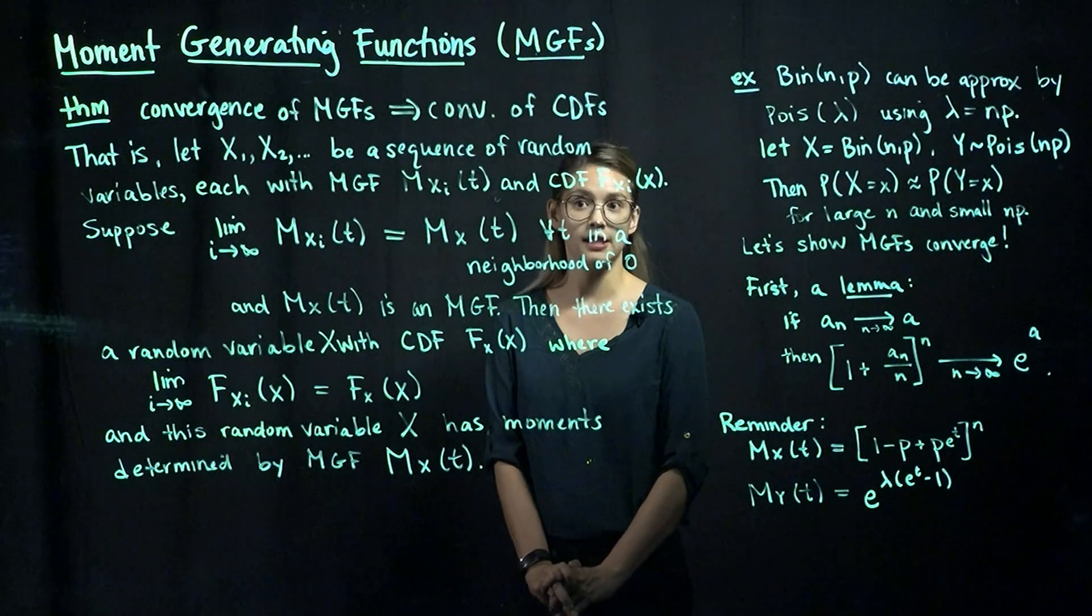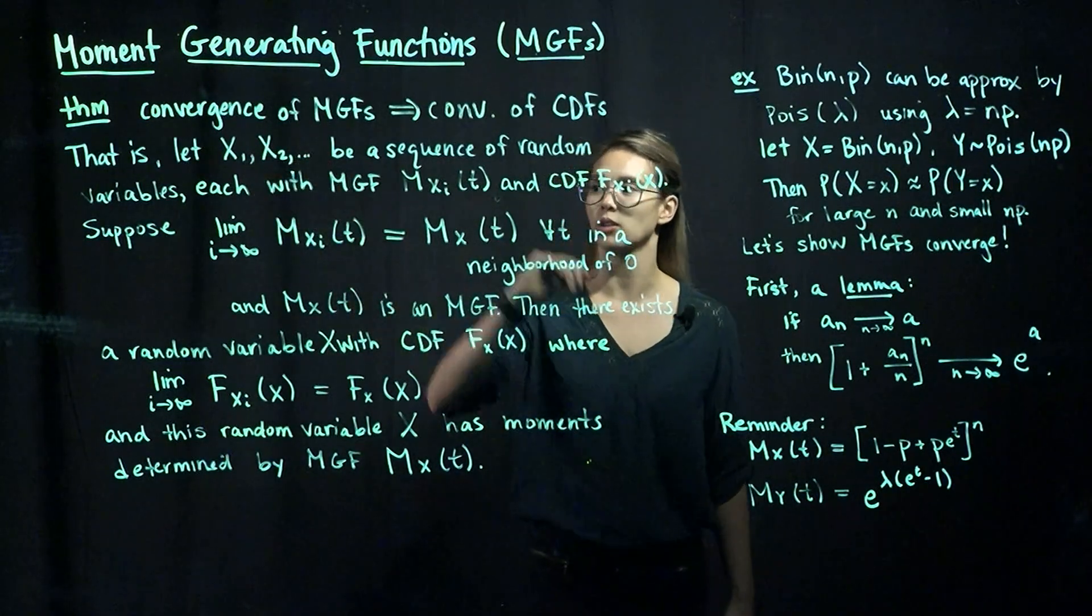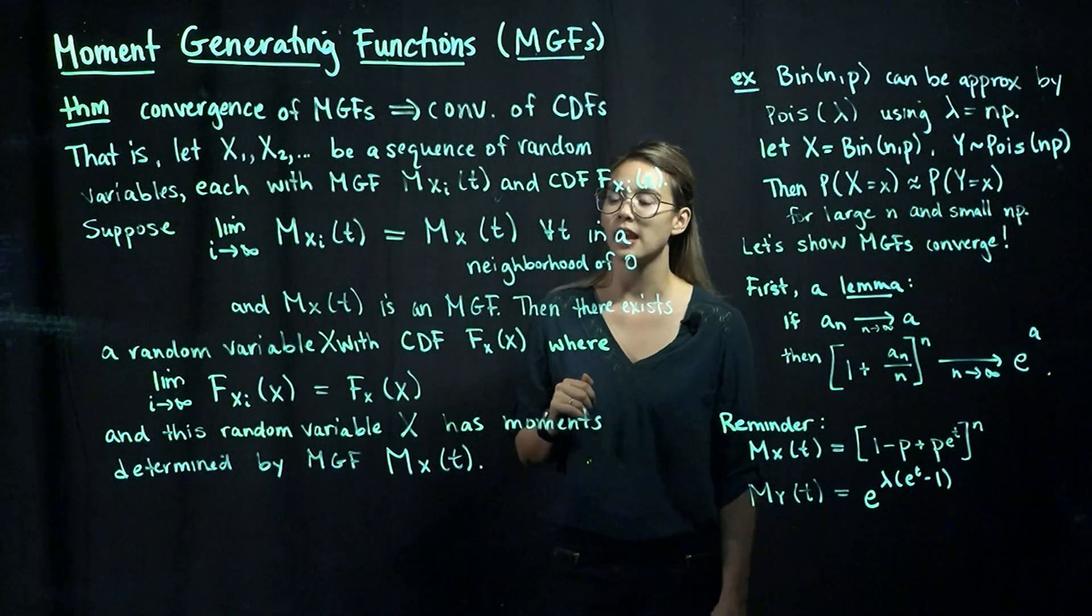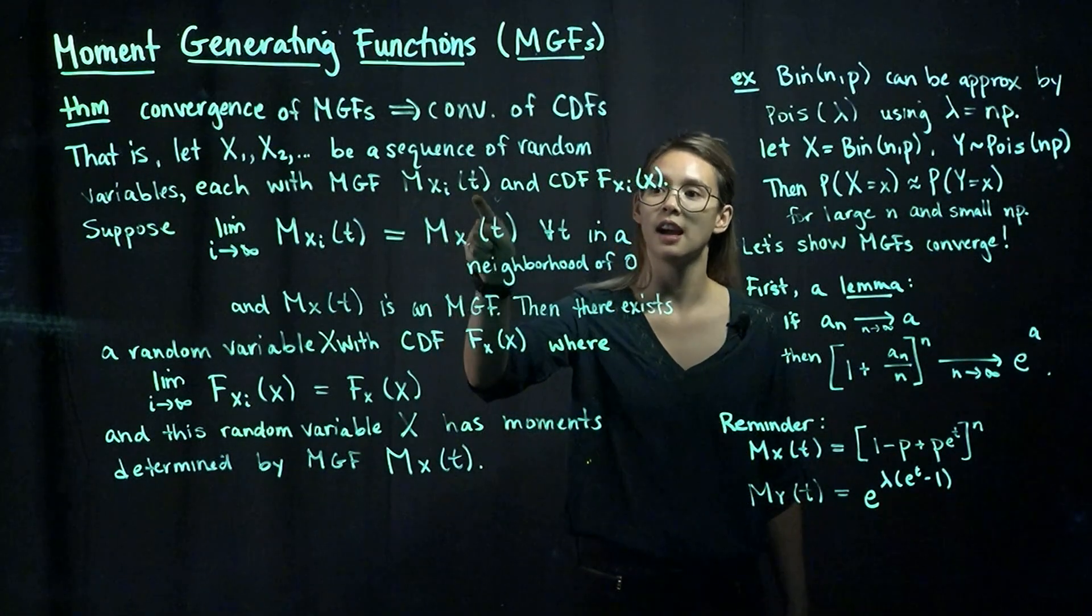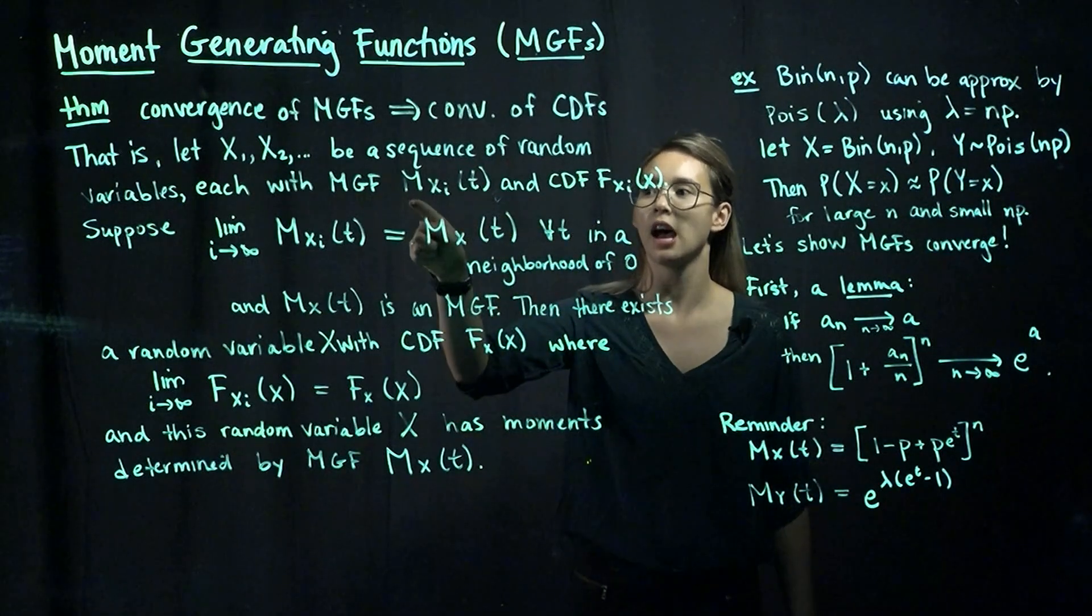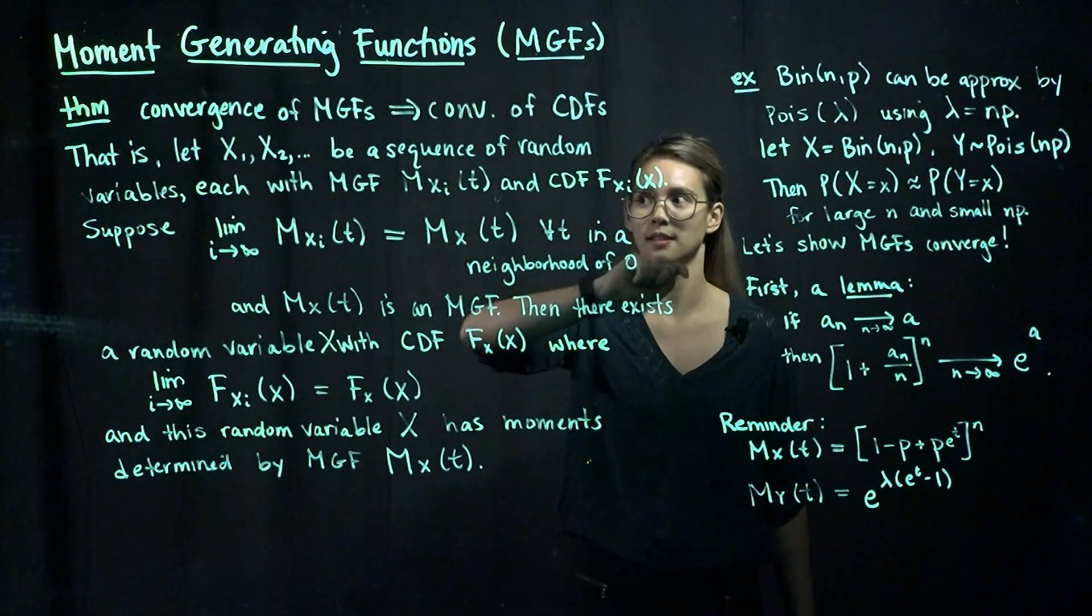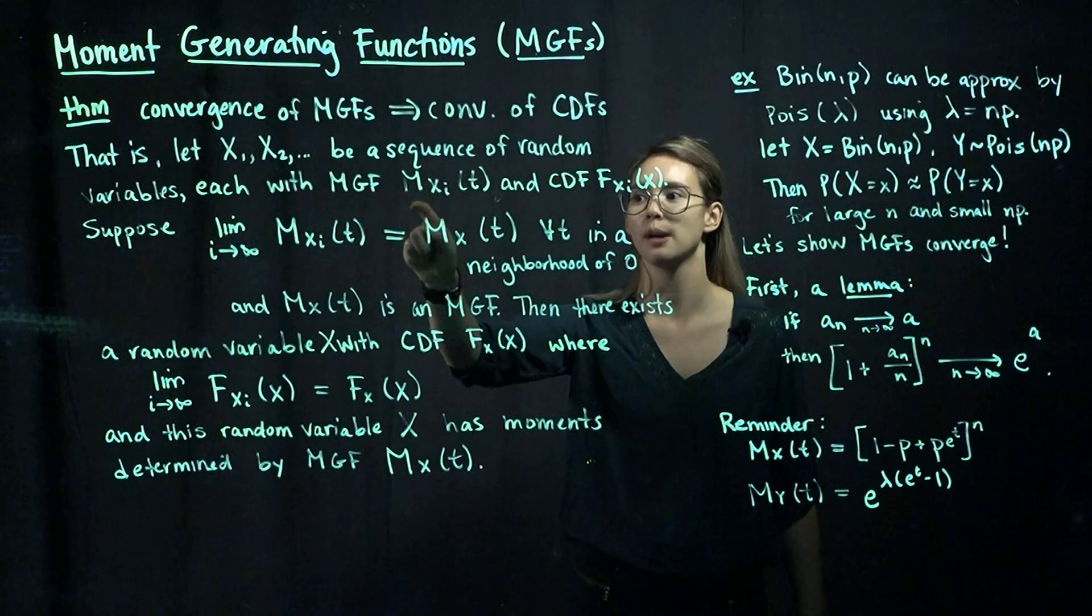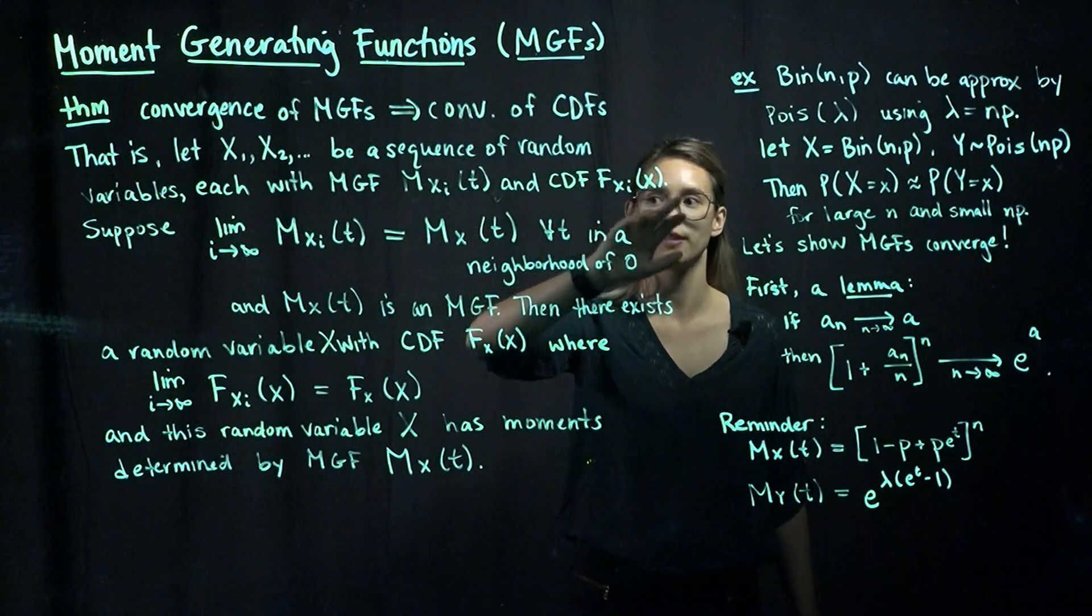Let's define a sequence of random variables x1, x2, x3, and so on. Each of these has MGF m sub xi of t, and then CDF f sub xi of x. So x1 has MGF mx1 of t and then CDF fx1 of x. And then x2 has MGF mx2 of t and CDF fx2 of x, and so on.